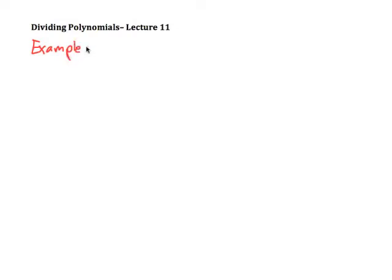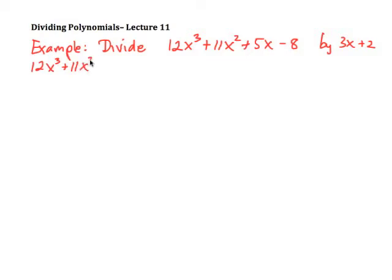So example. Divide. Let's have a look here. So let's say we have 12x cubed plus 11x squared plus 5x subtract 8 by 3x plus 2. Now, another way that we could write this, of course, is 12x cubed plus 11x squared plus 5x minus 8 divided by 3x plus 2.